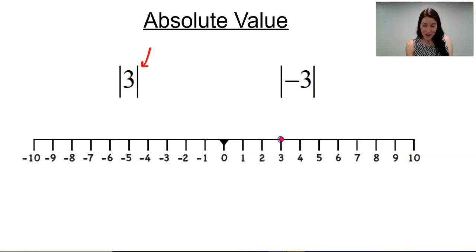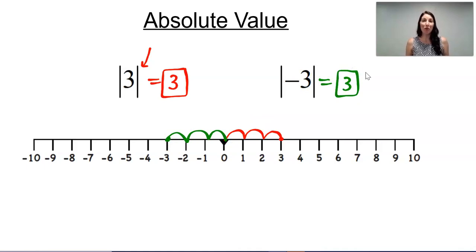So we think about the number 3. How far is that number from zero? 1, 2, 3. That would be 3 units from zero. What's the absolute value of negative 3? Well, negative 3 is right here, and negative 3 is 1, 2, 3, also 3 units away from zero. So the absolute value of both 3 and negative 3 is 3.